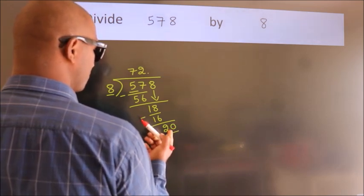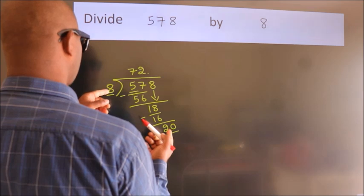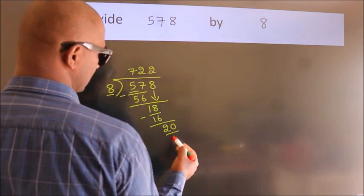A number close to 20 in 8 table is 8 2's 16.